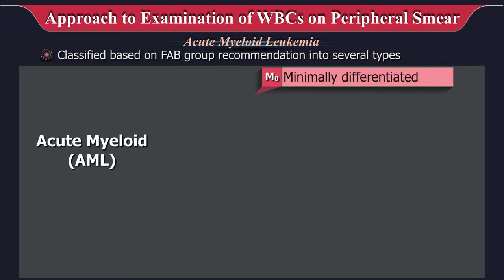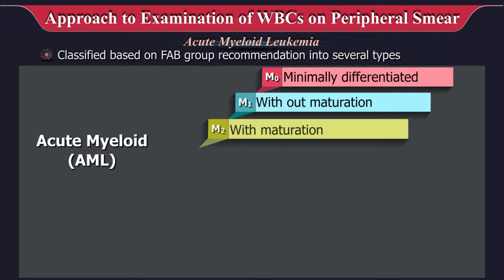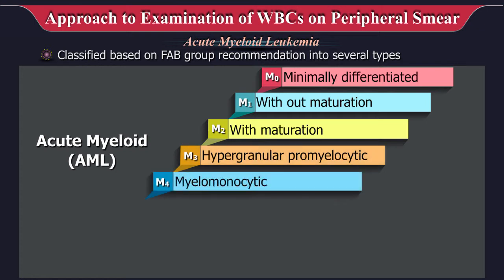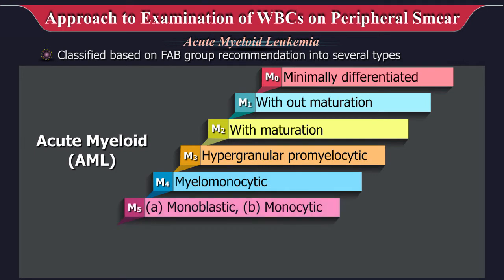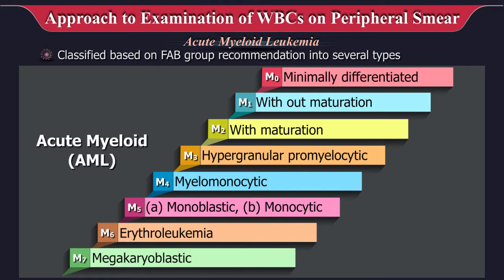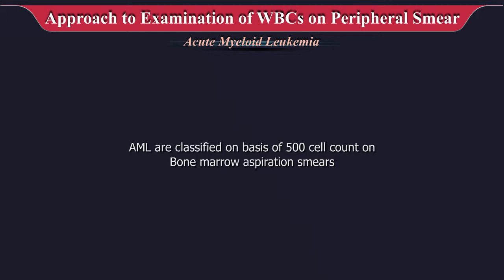Acute myeloid leukemias are classified based on the FAB group recommendations: M0 minimally differentiated, M1 without maturation, M2 with maturation, M3 hypergranular promyelocytic, M4 myelomonocytic, M5A monoblastic and M5B monocytic, M6 erythroleukemia, M7 megakaryoblastic. Rare types include eosinophilic and natural killer. AML is classified based on a 500-cell count on bone marrow aspiration smear.